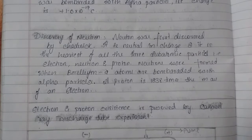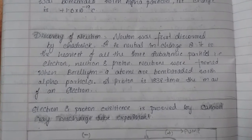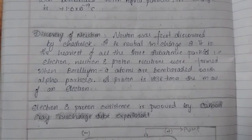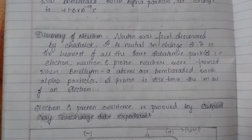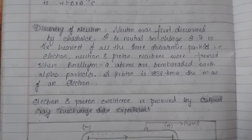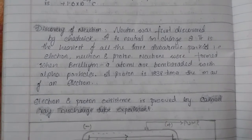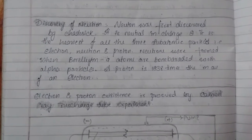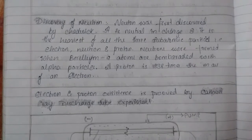And neutron was formed when beryllium-9 atoms were bombarded with alpha particles, that is helium plus 2, that means helium dipositive particles. A proton is 1838 times heavier than an electron, that is 1837 times of a hydrogen atom.